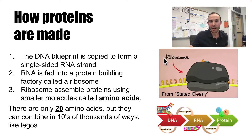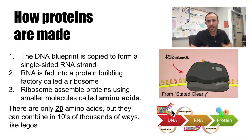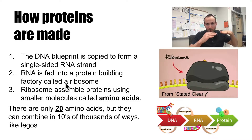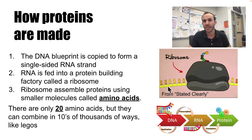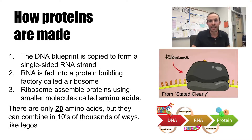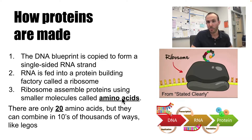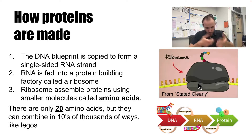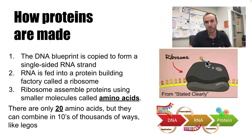How your body actually makes proteins — and I got this graphic from the wonderful YouTube channel Stated Clearly — is first the DNA, which has that code, needs to be ripped open and copied. We call that transcription. The DNA is copied into a single-sided strand called RNA, which is a lot smaller and is fed inside of a ribosome. The ribosome is the factory, and it actually builds the proteins from building blocks called amino acids, in much the same way you can take Legos and assemble them to make a tower.